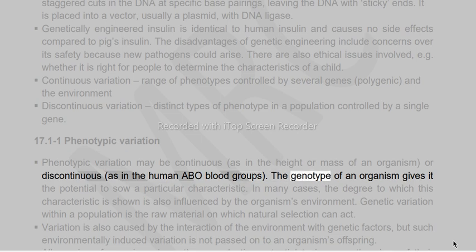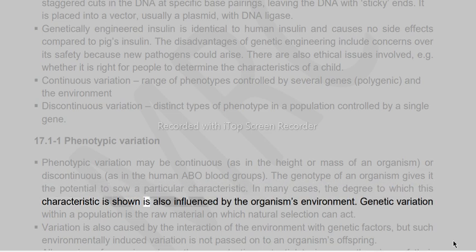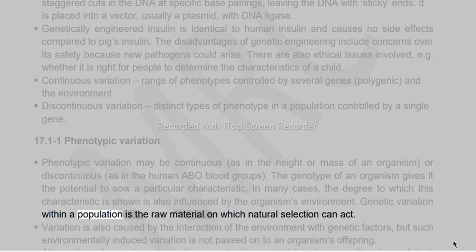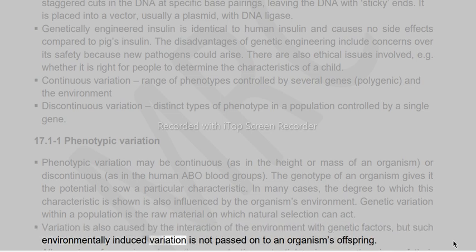The genotype of an organism gives it the potential to show a particular characteristic. In many cases, the degree to which this characteristic is shown is also influenced by the organism's environment. Genetic variation within a population is the raw material on which natural selection can act. Environmentally induced variation is not passed on to offspring.